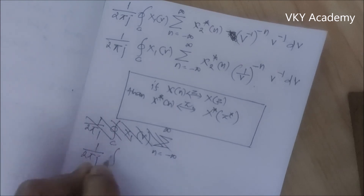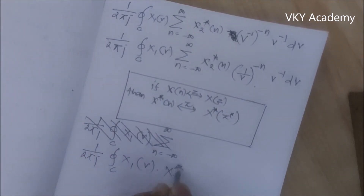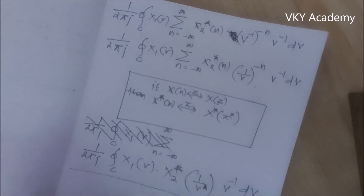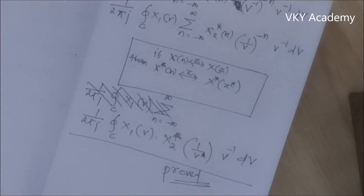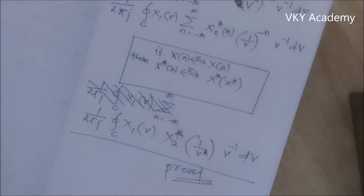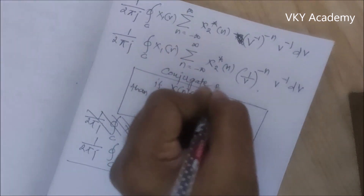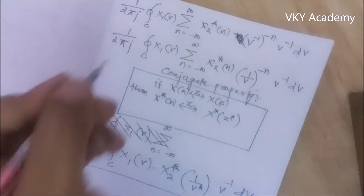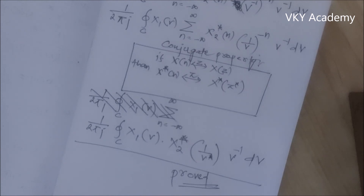Using this conjugate property, we get 1 by 2πj times the contour integral of X1(V) · X2*(1/V*) · V⁻¹ dV, which is the RHS of Parseval's theorem. So in this way we can prove Parseval's theorem of Z transform by using the complex convolution property as well as the conjugate property, which we have already discussed in a previous video lecture. In the next lecture we will discuss the initial value theorem and final value theorem of the Z transform.